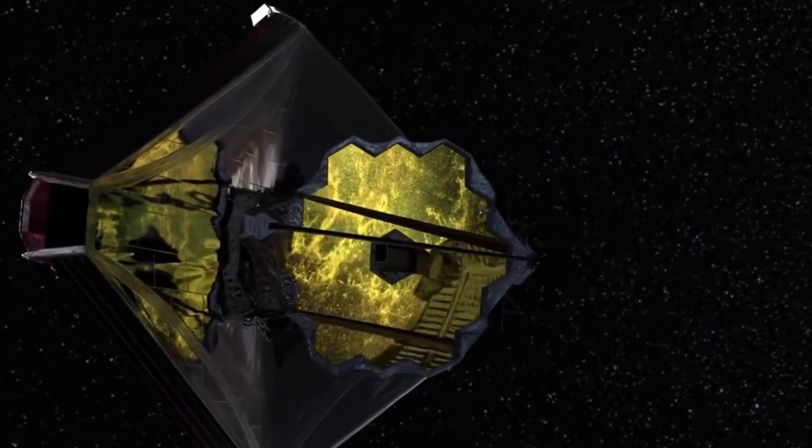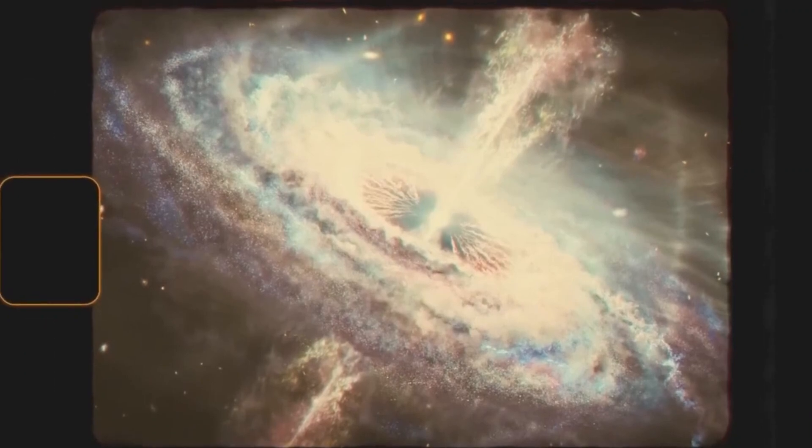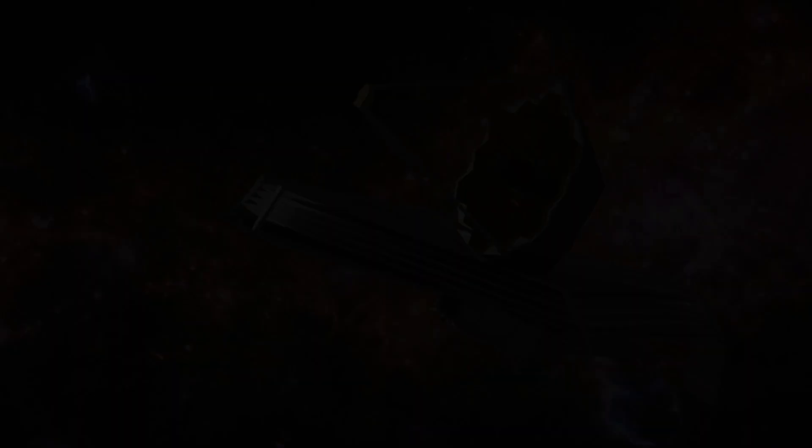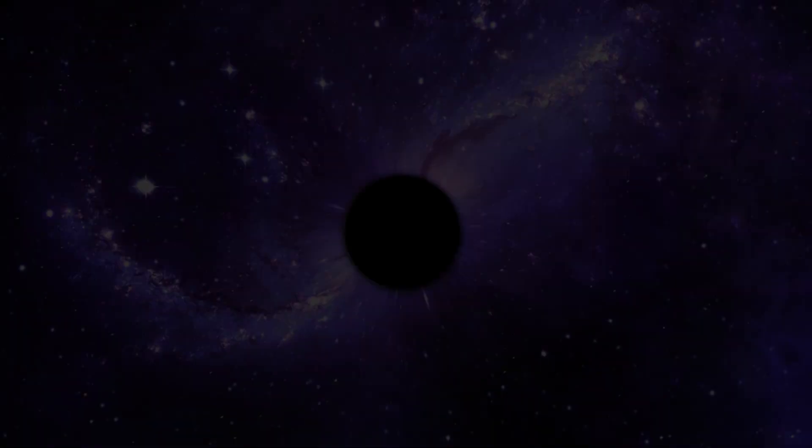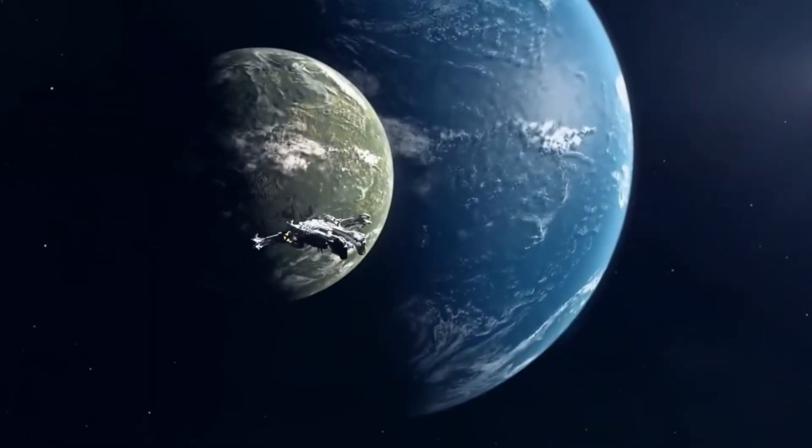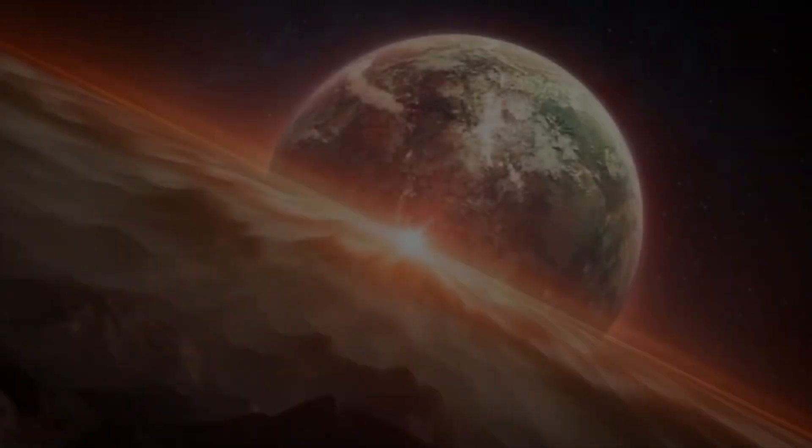The James Webb Telescope has detected two more smaller black holes that existed one and 1.1 billion years after the Big Bang. These discoveries were made possible thanks to Webb's Cosmic Evolution Early Release Science Survey, a program that combines highly detailed infrared images and data to map the oldest objects in the universe. Discoveries such as the black hole in the galaxy CEERS 1019, as well as the galaxy itself and many other galaxies that existed in the young universe, allow astronomers a unique look into the early stages of the universe.